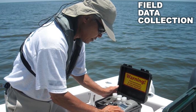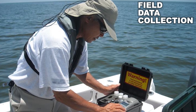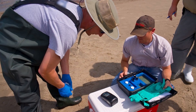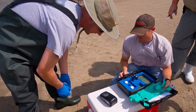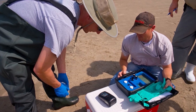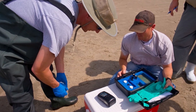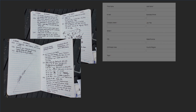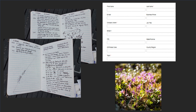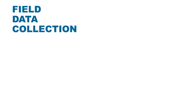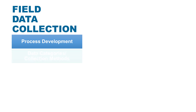Field data require careful collection to be representative and defensible. Having a plan and understanding your data quality objectives and final work product are critical for successful field data collection. Data collected can be in various formats, including hard copy, structured digital, and unstructured digital, and cover a spectrum of time and space scales. Our field data collection best practices fact sheets present suggested techniques for developing field data collection programs focused on data quality types.